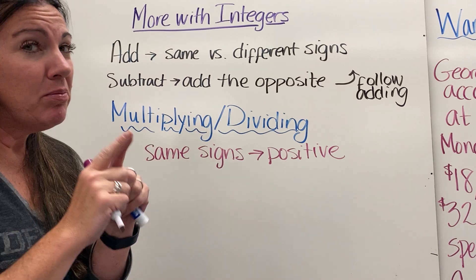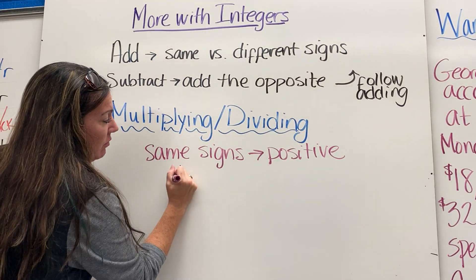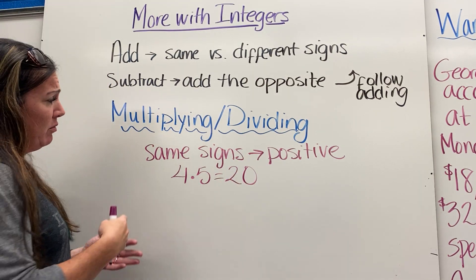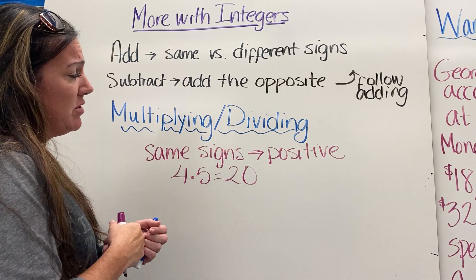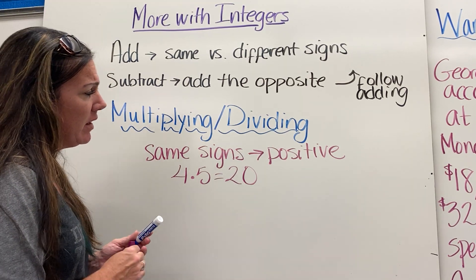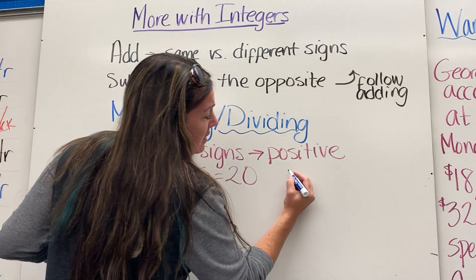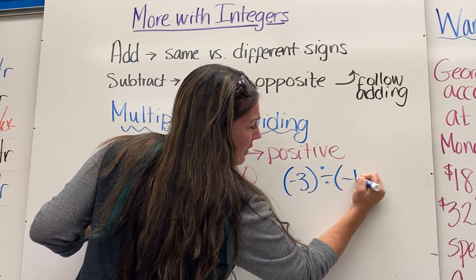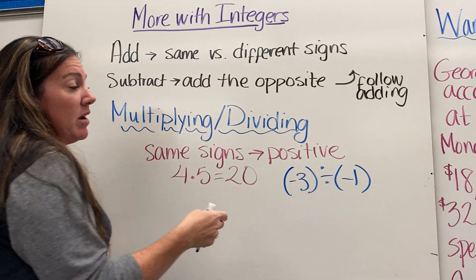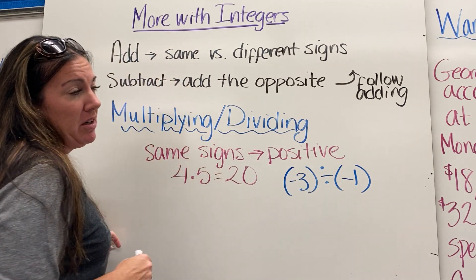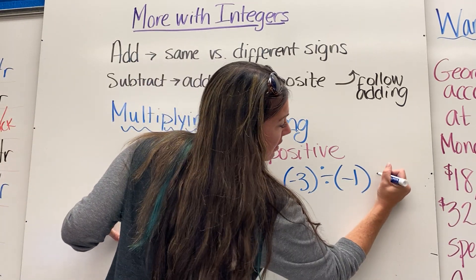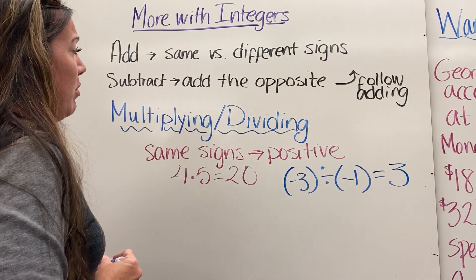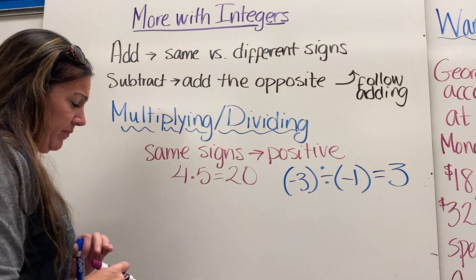For example, if we multiply two positive numbers like 4 times 5, we get positive 20 — something we're comfortable with. And if we do negative 3 divided by negative 1, we think of it as 3 divided by 1 which is 3. They're both negative, so our answer is positive. This works for both multiplying and dividing.